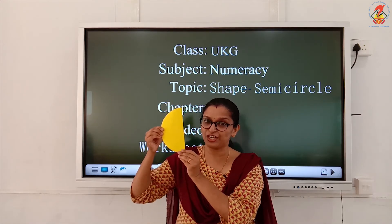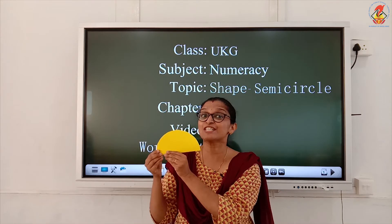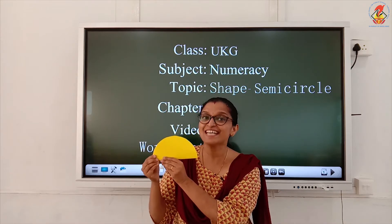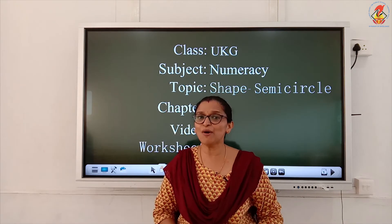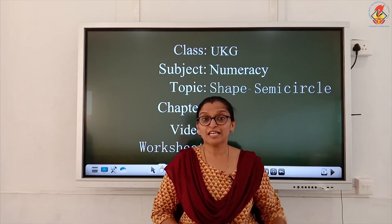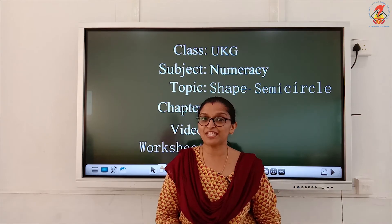It is with a curve and a standing line, or with a curve and a sleeping line. Whichever direction you turn it, it is still the semicircle. Now let's see these pictures and find out their shapes.